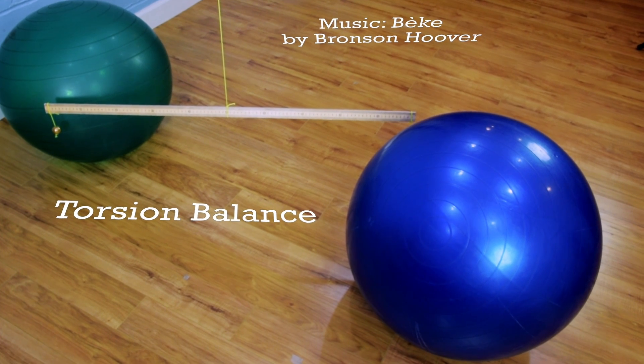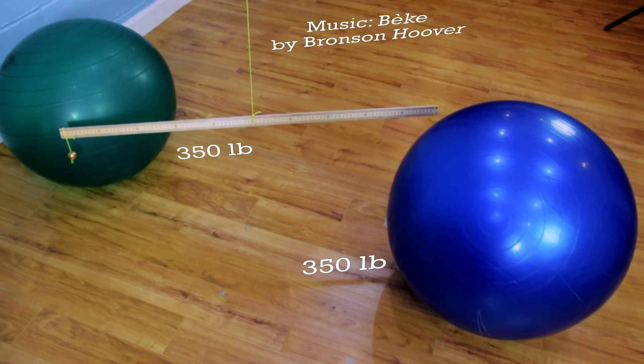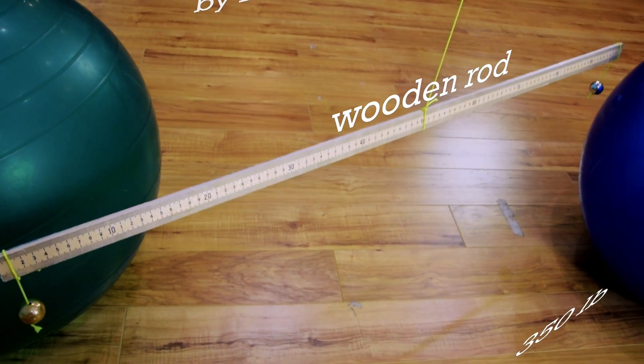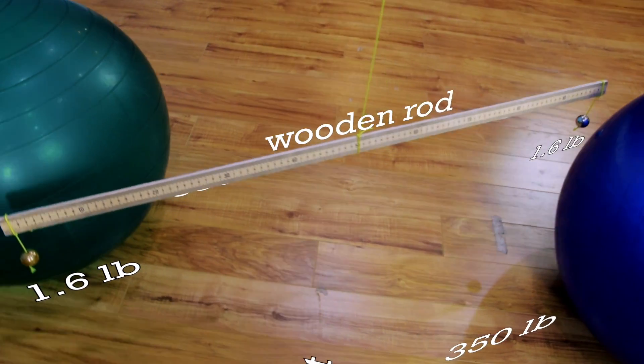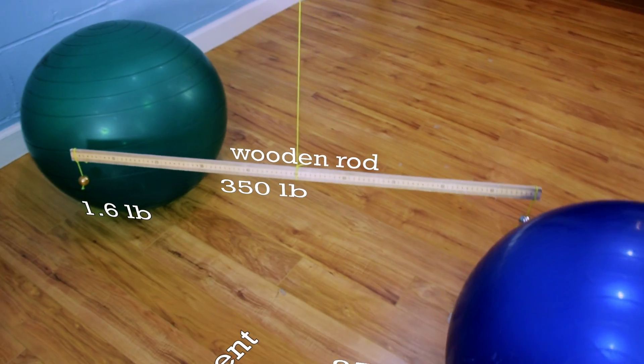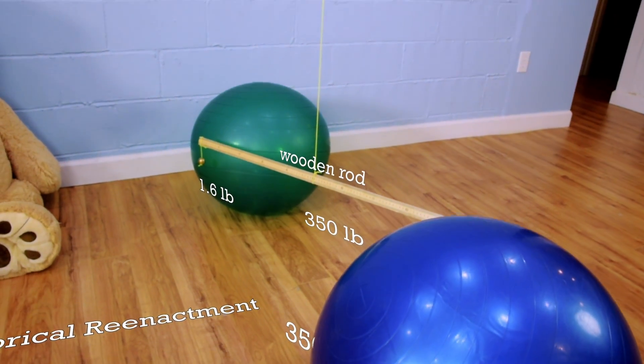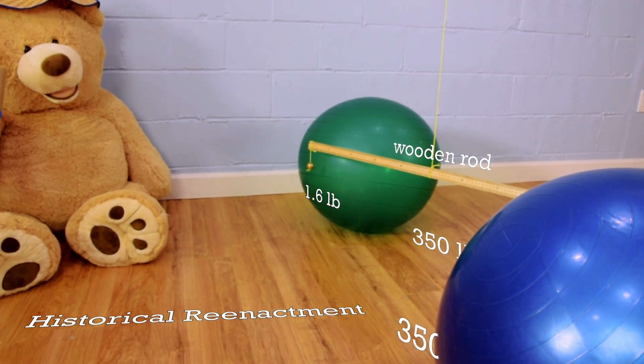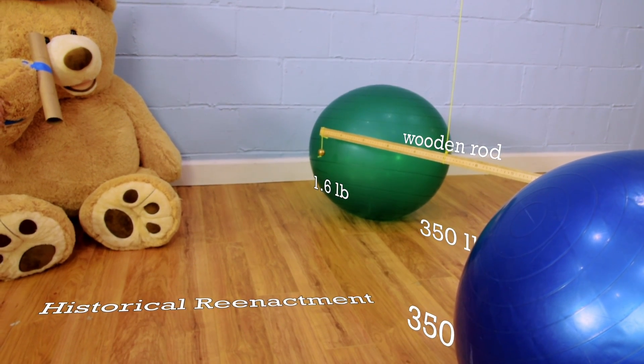The torsion balance had two stationary 350-pound lead balls and suspended on a metal wire, a six-foot-long horizontal wooden rod with two 1.6-pound lead balls on either end of the wooden rod. The whole contraption was put in a large box and Henry Cavendish used telescopes to observe the slight motion of the two 1.6-pound lead balls toward the other 350-pound lead balls.